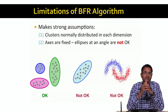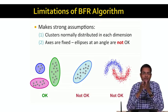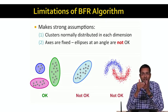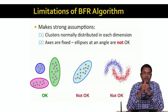The first assumption that the BFR algorithm makes is that the clusters are normally distributed in each dimension — that in each dimension, there is a fixed centroid and a fixed standard deviation that each cluster follows along each dimension. The second strong assumption that the BFR algorithm makes is that the axes are fixed.